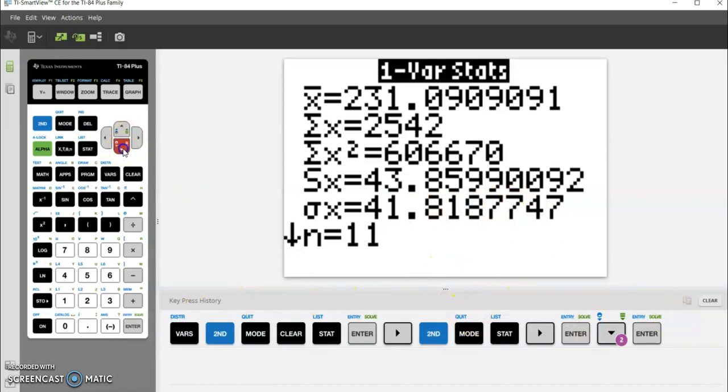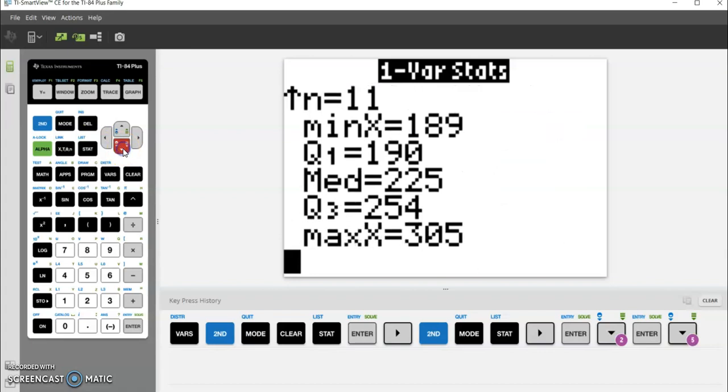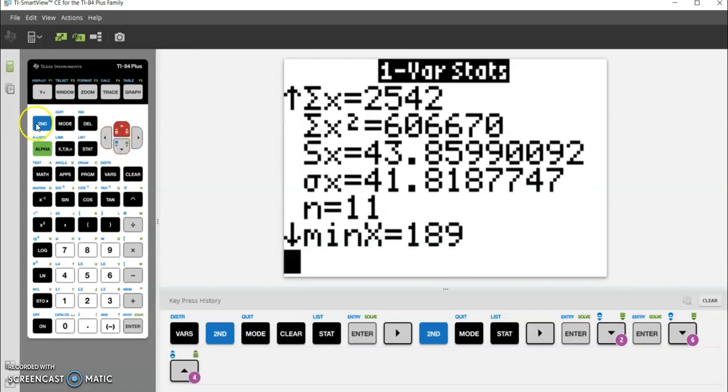You'll notice here it gives you min and max, so if you need to find range, you could subtract those. You'll notice that variance isn't on here.